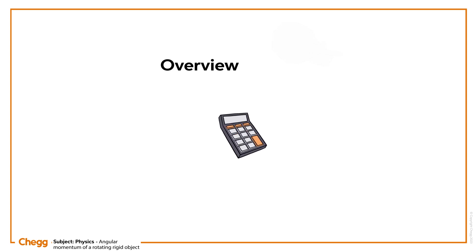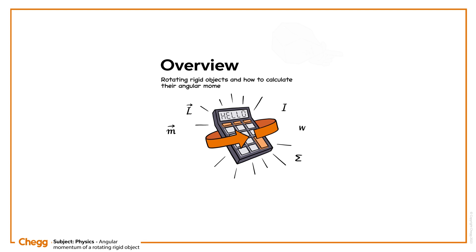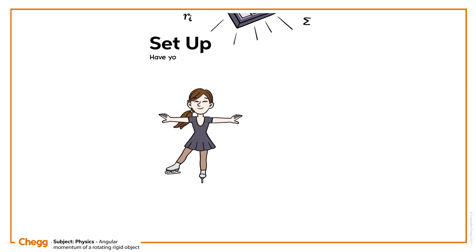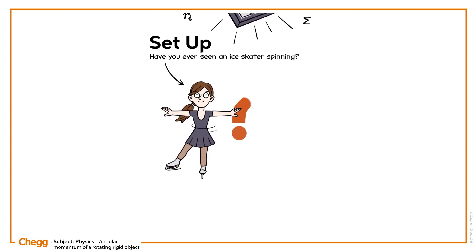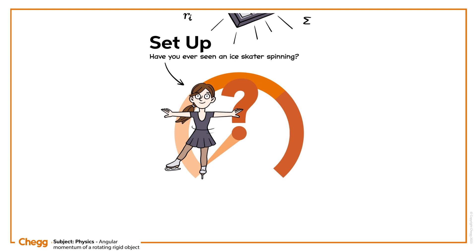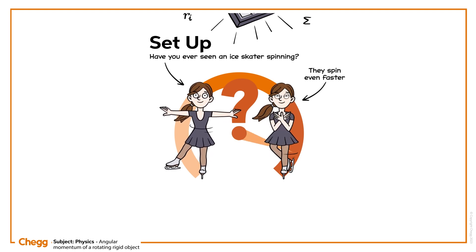The focus of today's video is rotating rigid objects and how to calculate their angular momentum. Have you ever seen an ice skater spinning? What happens when they move their arms inwards towards their chest? They spin even faster. But why? The answer has something to do with angular momentum.